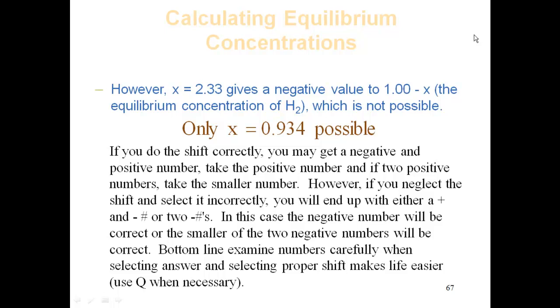If you do the shift correctly, you will get a negative and a positive answer or you may get two positive answers. If you get a negative and a positive answer, then it's going to be the positive number. If you get two positive numbers, it's going to be the smaller number. If you do the shift correctly, this is what's going to happen.